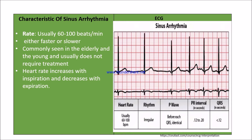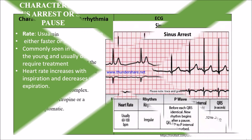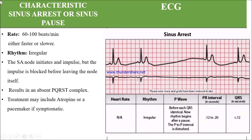If we look at the rhythm from one R wave to the second, and second to third, the rhythm is irregular. The P wave is identical — we can see a P wave present before each QRS. The PR interval is 0.12 to 0.20 seconds and the QRS is less than 0.12 seconds, so it is normal. This is all about the sinus arrhythmia ECG.